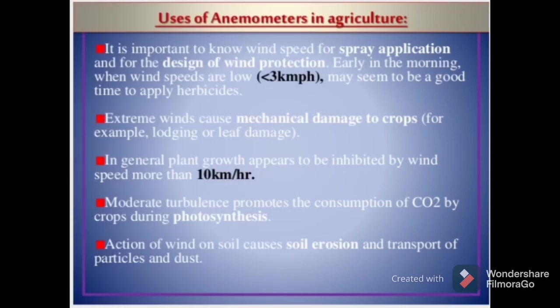Uses of anemometers in agriculture: it is important to know wind speed for spray application and for the design of wind protection. Early in the morning, when wind speeds are low, for example less than 3 km per hour, it may seem to be a good time to apply herbicides. Extreme winds cause mechanical damage to crops, for example lodging or leaf damage. In general, plant growth appears to be inhibited by wind speeds more than 10 km per hour. Moderate turbulence promotes the consumption of carbon dioxide by crops during photosynthesis. Action of wind on soil causes soil erosion and transport of particles and dust.